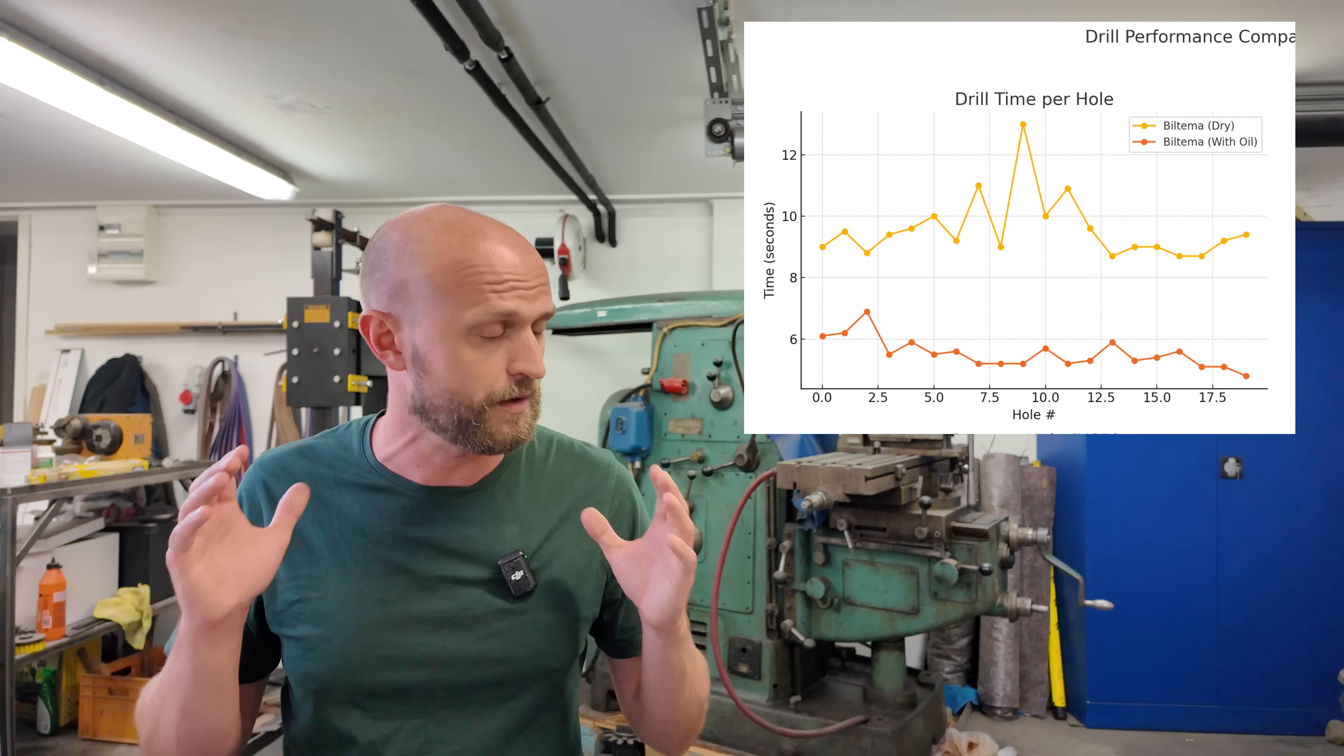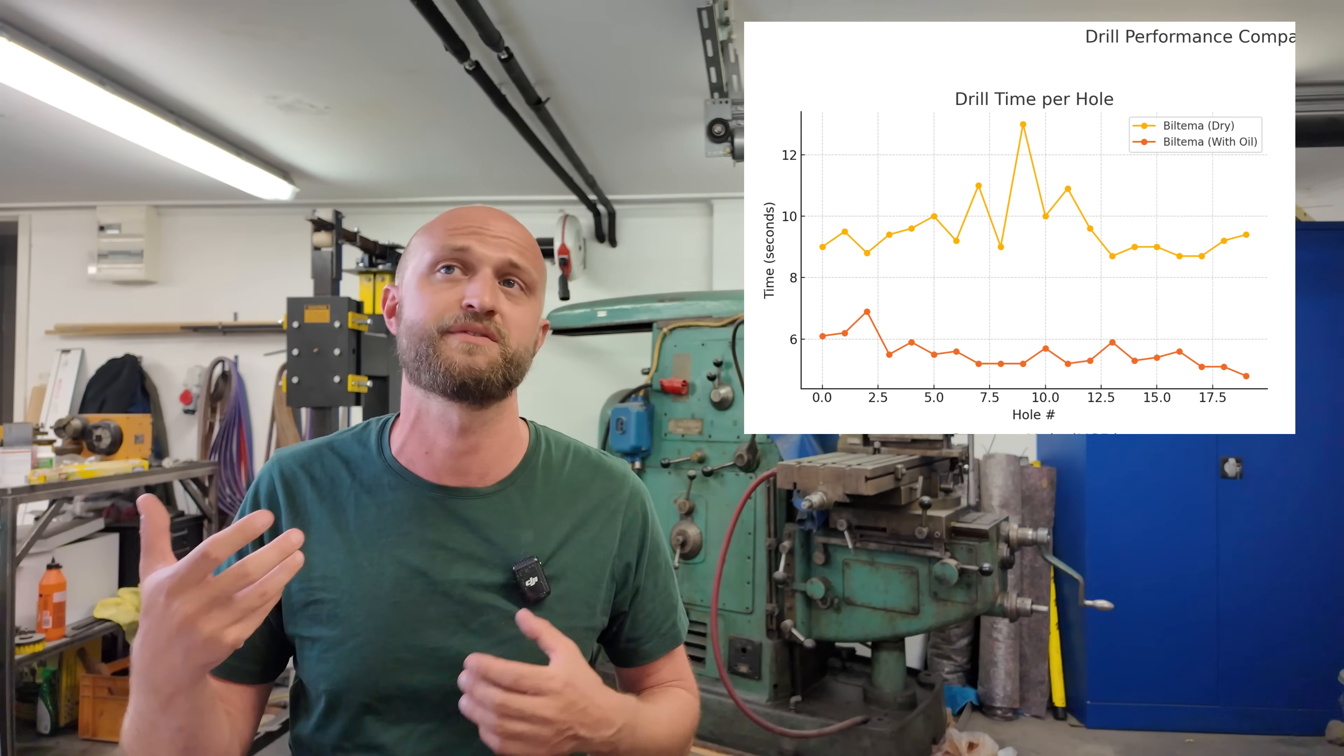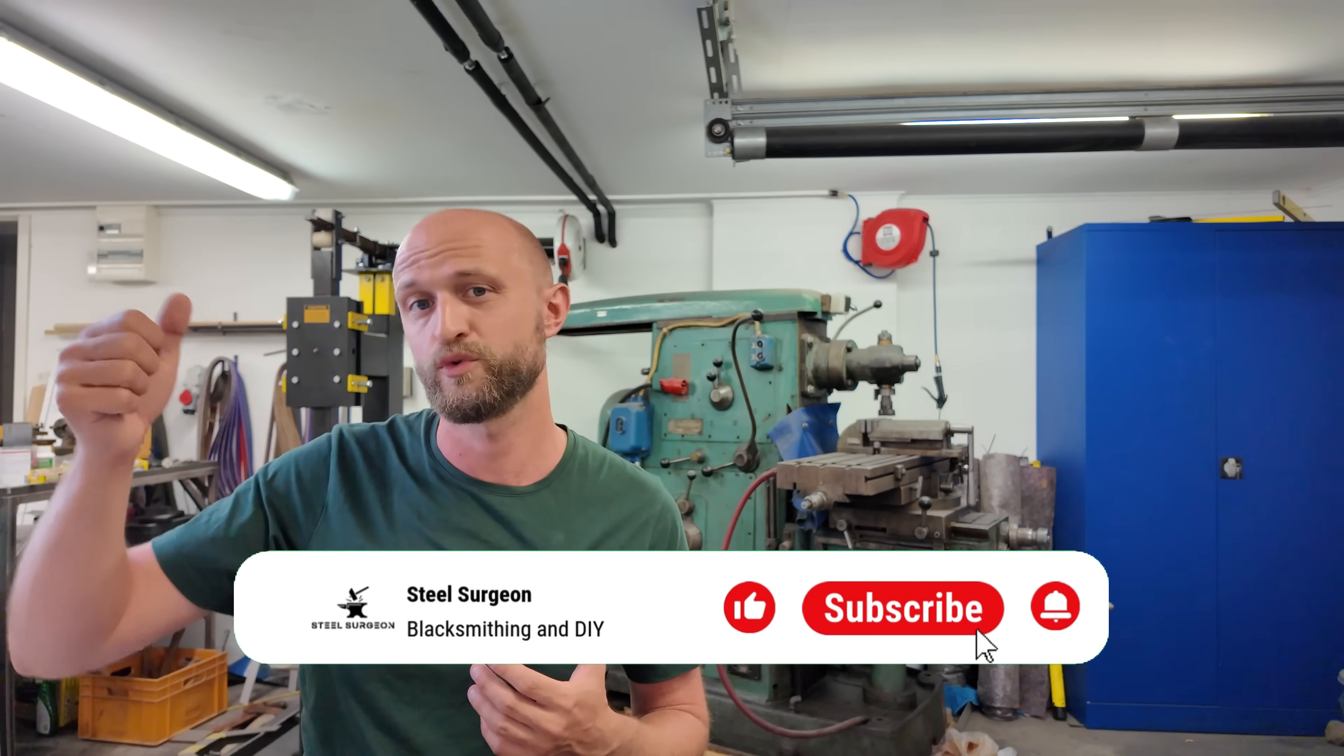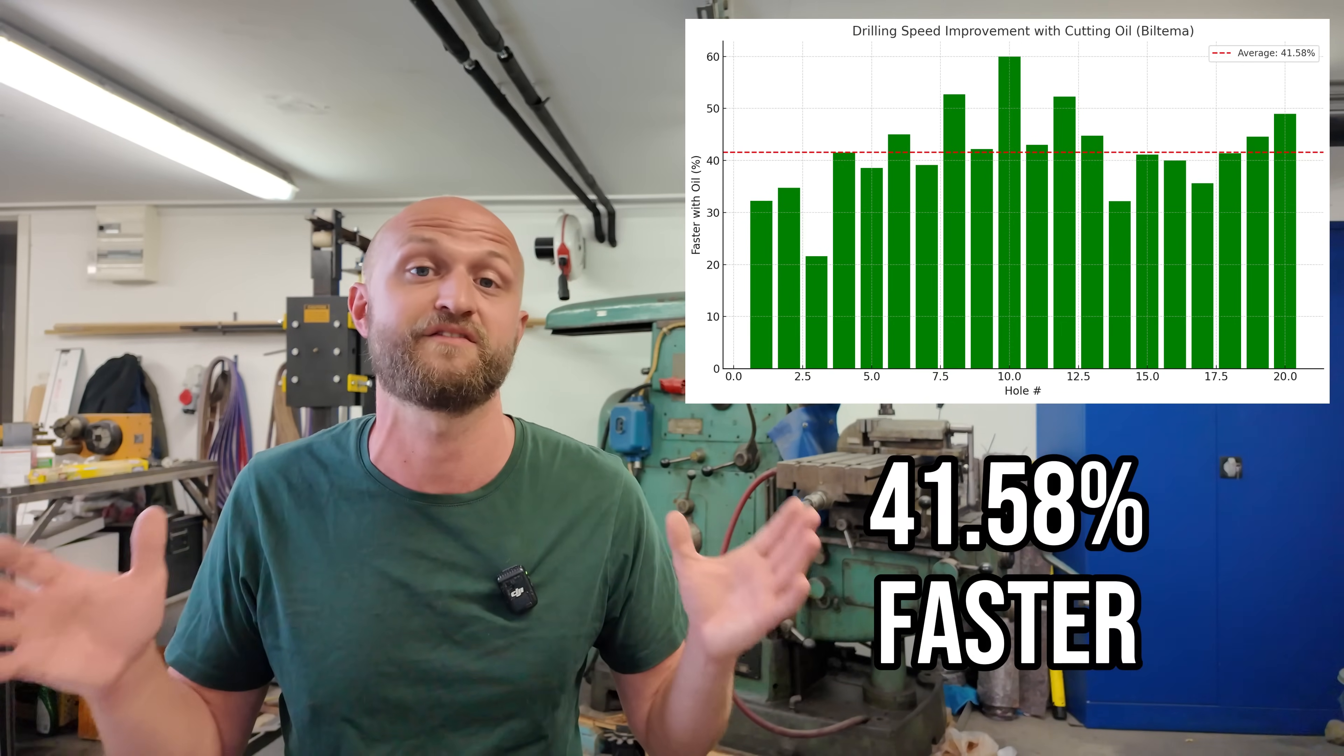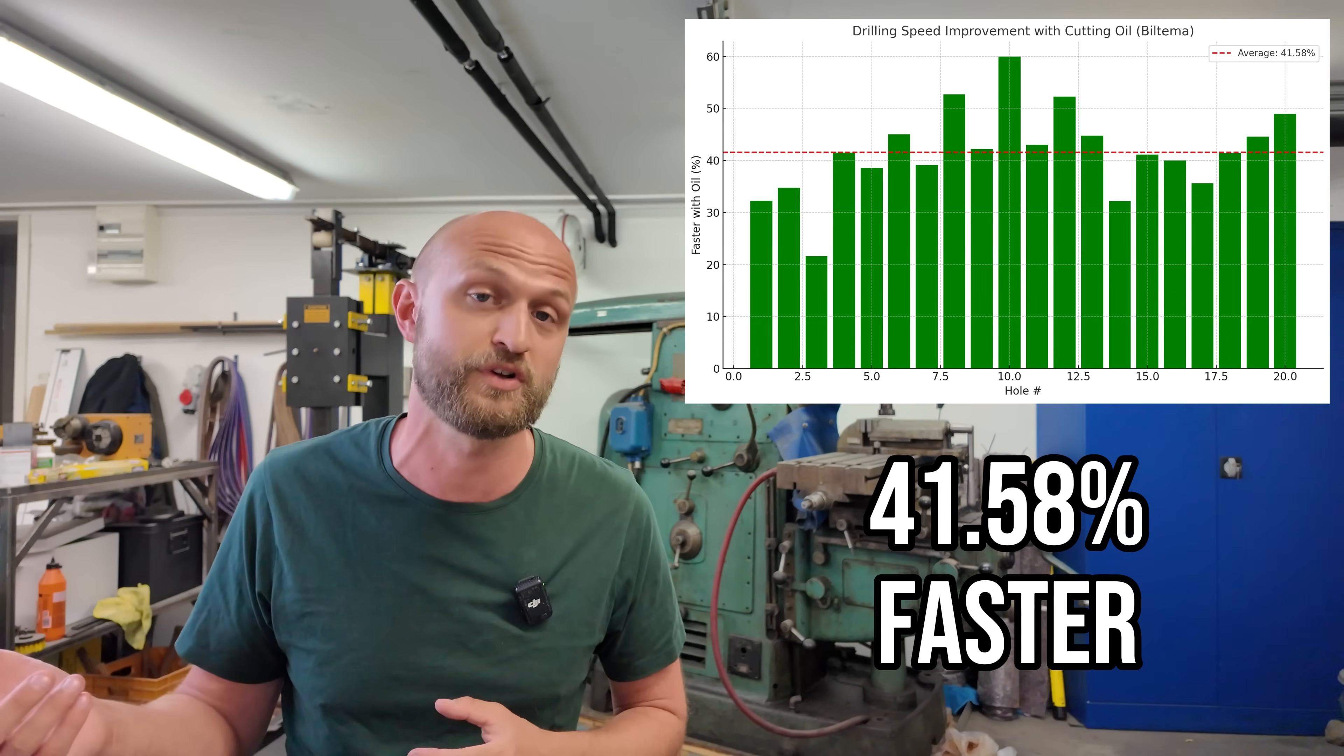There's a lot less wear on the drill bit where I used oil. In the hand, I could feel that the bit without oil required a lot more pressure because it was getting more torn and more blunt. I didn't feel that on the drill bit with cutting oil. The drilling times are immensely faster - on average 41.5% faster, and that's a lot. If you're interested to see how this compares against a premium drill bit, check out my other video.